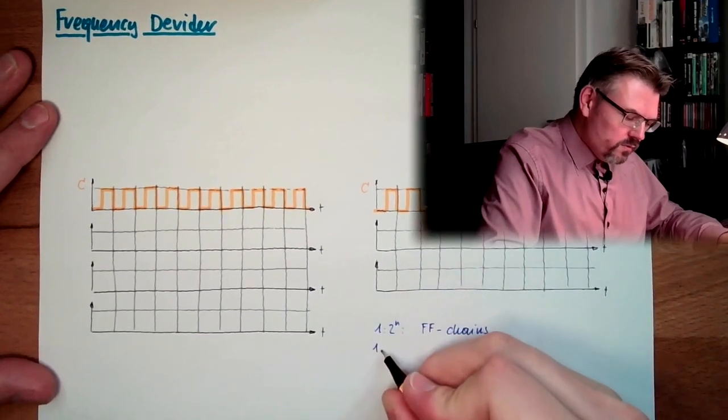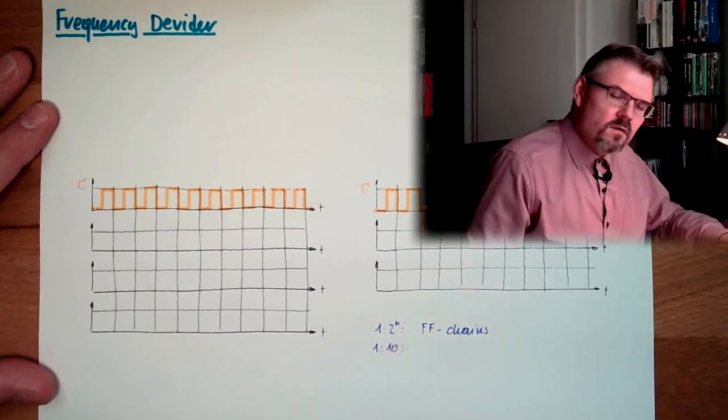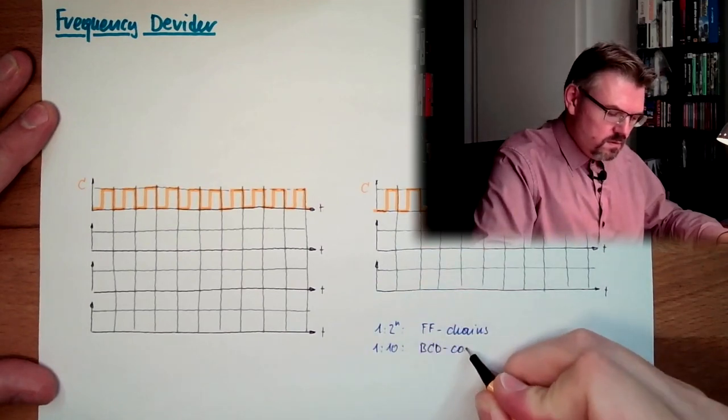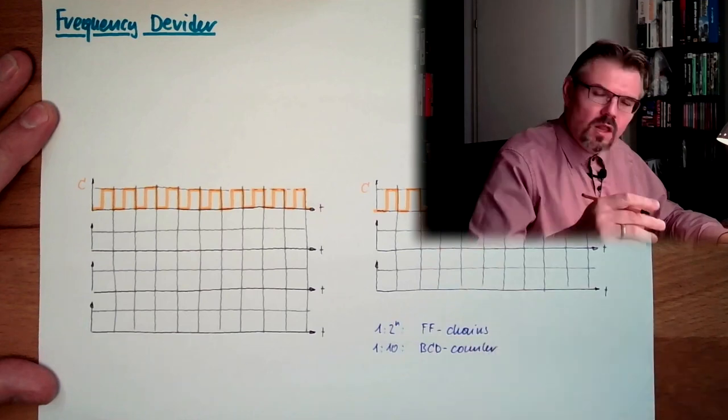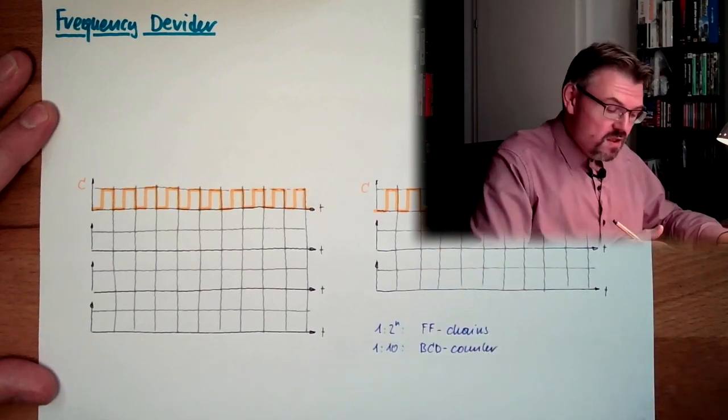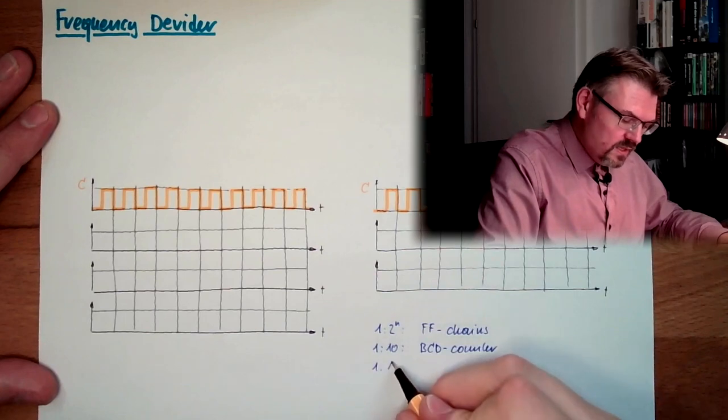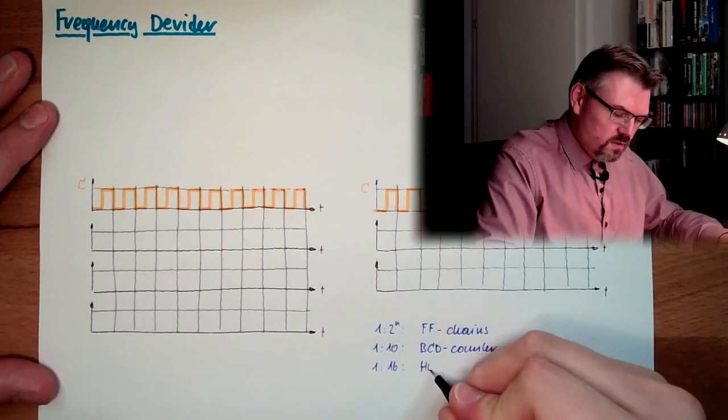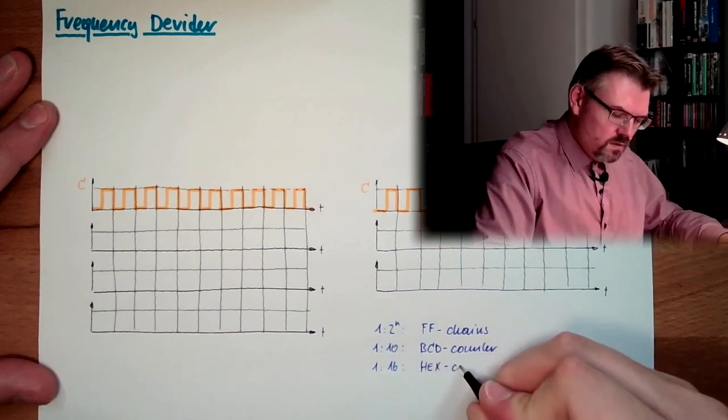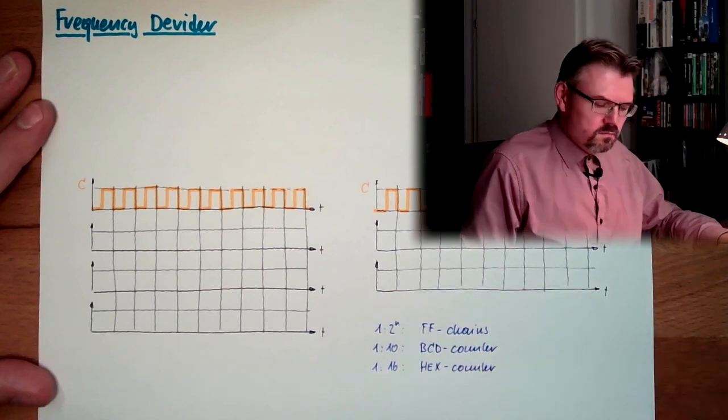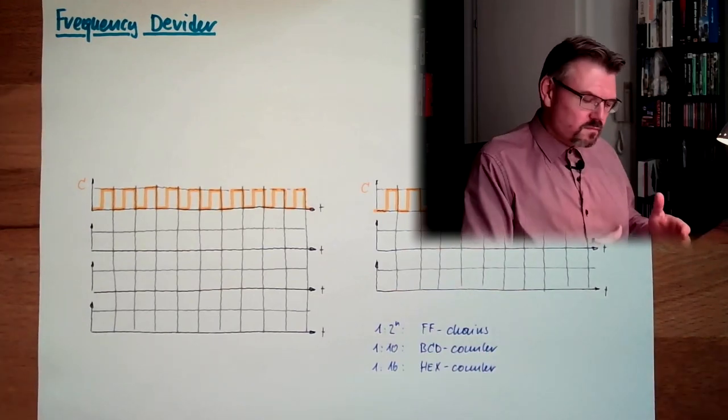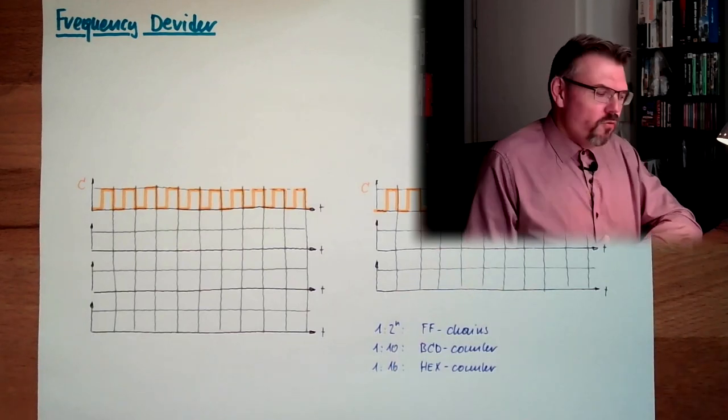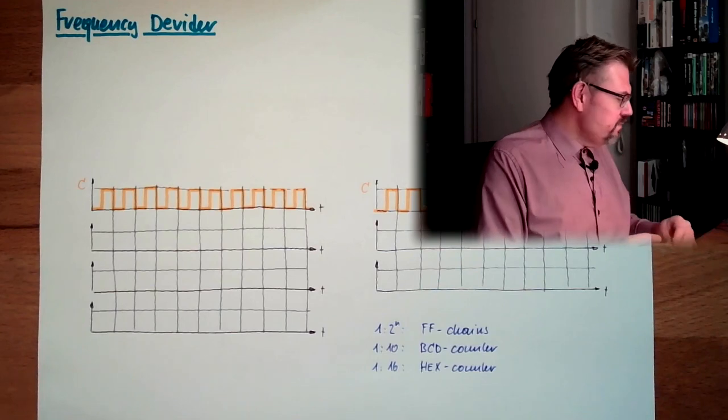If we want to have it 1 to 10, we could use a BCD counter. The last digit is 1 to 10. If we are using 1 to 16, then we could use a hex counter. However, with those numbers, I cannot... You know, 3 is important. Why is 3 important?